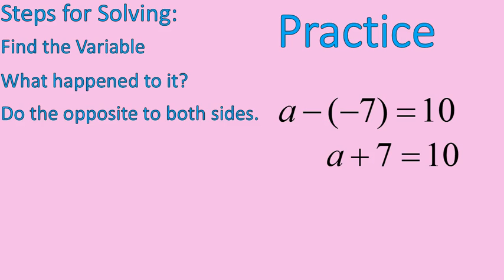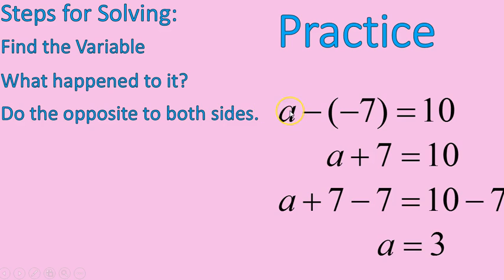All right. I'm going to find my variable, A. What happened to A or what's connected to A? Plus 7. I'll do the opposite to both sides of this equation. So I will be subtracting 7 from both sides of this equation. 7 minus 7 is 0, leaving A by itself on the left. And 10 minus 7 equals 3. A is equal to 3. You can check your work at the beginning. Is 3 minus negative 7 equal to 10? Or in other words, is 3 plus 7 equal to 10? Yes, it is. And so we've had a successful practice. Yay!